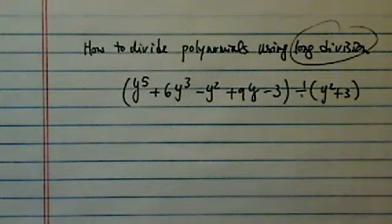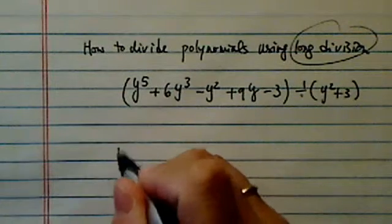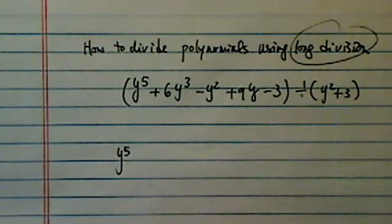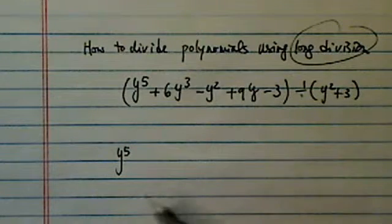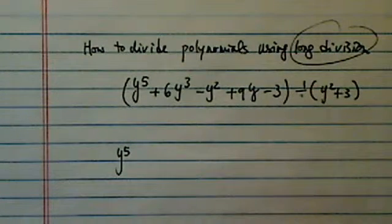Long division is traditionally difficult for a lot of students, and it's for a good reason. It's long, it's messy, and it's tedious. But if we slow down, we have a certain process we can handle this.